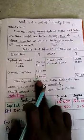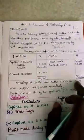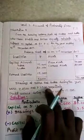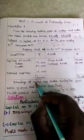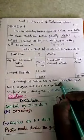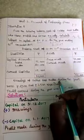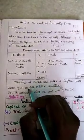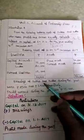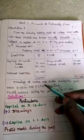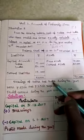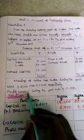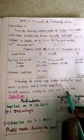Drawings of Subha and Sudha during the year were ₹2,500 and ₹3,500 respectively. The date is not given, so during the year Subha withdrew ₹2,500 and Sudha withdrew ₹3,500 for personal use. Profit earned during the year was ₹15,000.